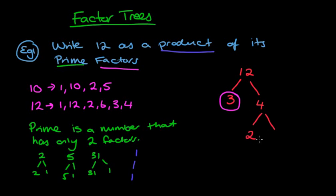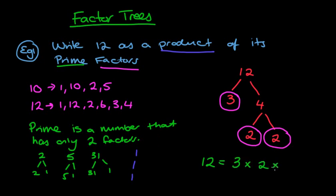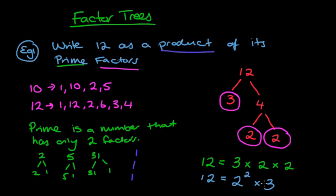Now 4 is not a prime number, so that continues going down. What multiplies together to give 4? 2 and 2. They're both prime numbers so we circle those. The branches have all ended and our tree is complete. The question said write 12 as a product of its prime factors, so we write: 3 × 2 × 2. You can write them smallest to biggest. We can also rewrite that more simply: 2 × 2 is 2 squared, so 2² × 3. To check: 3 × 2 = 6, 6 × 2 = 12. Correct.